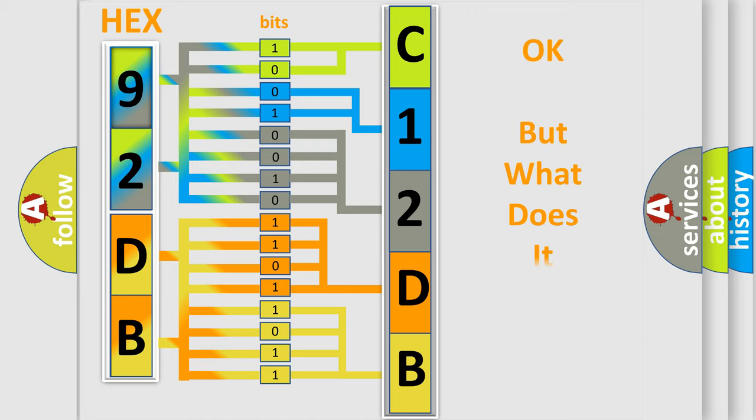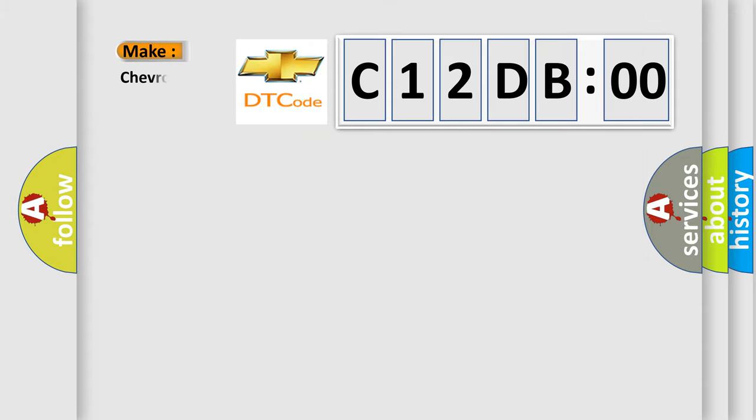The number itself does not make sense to us if we cannot assign information about what it actually expresses. So, what does the diagnostic trouble code C12DBOO interpret specifically for Chevrolet car manufacturers?